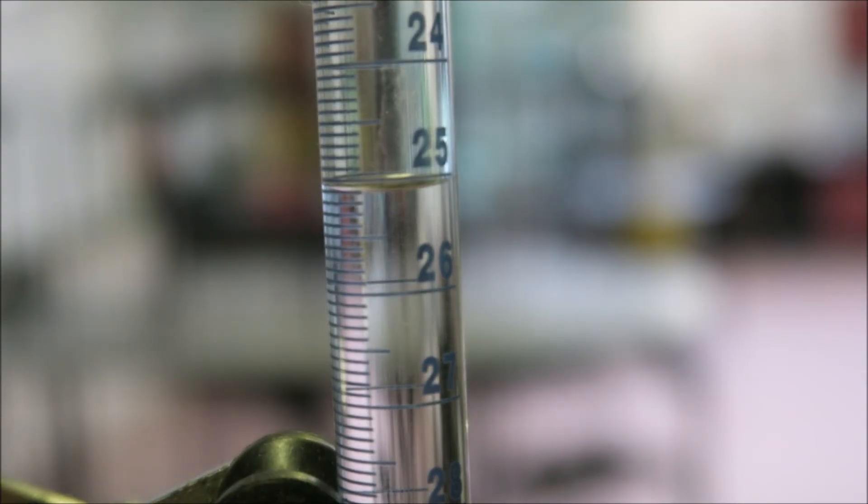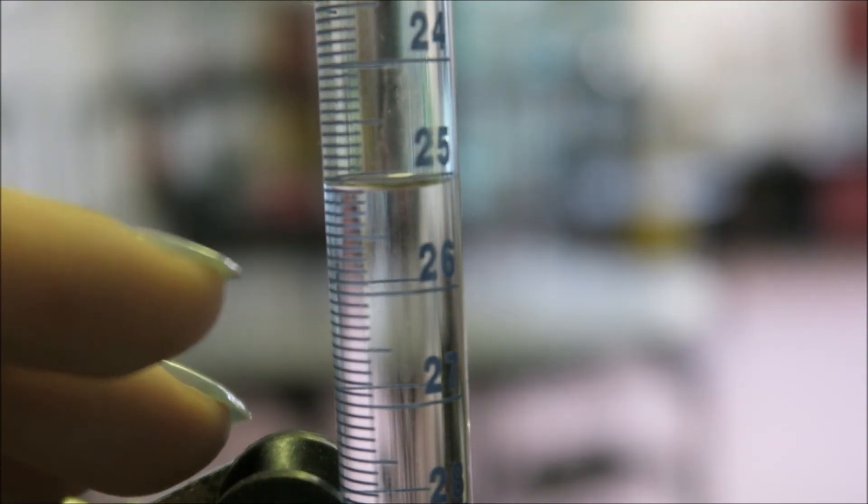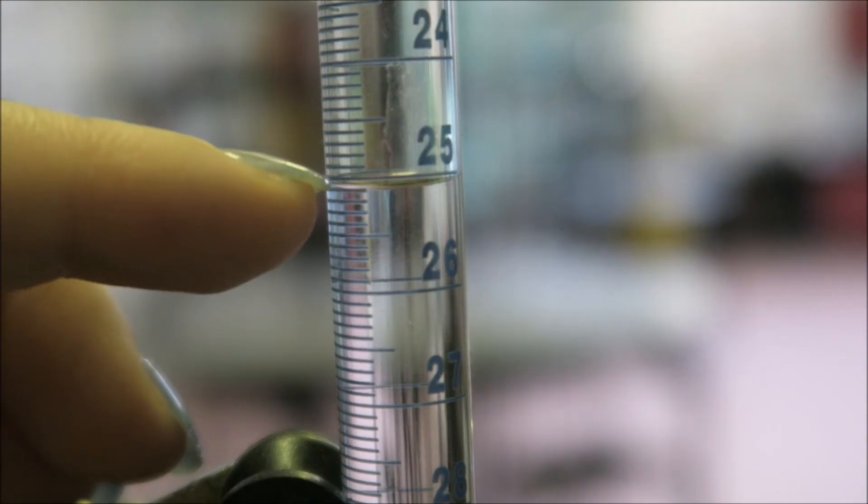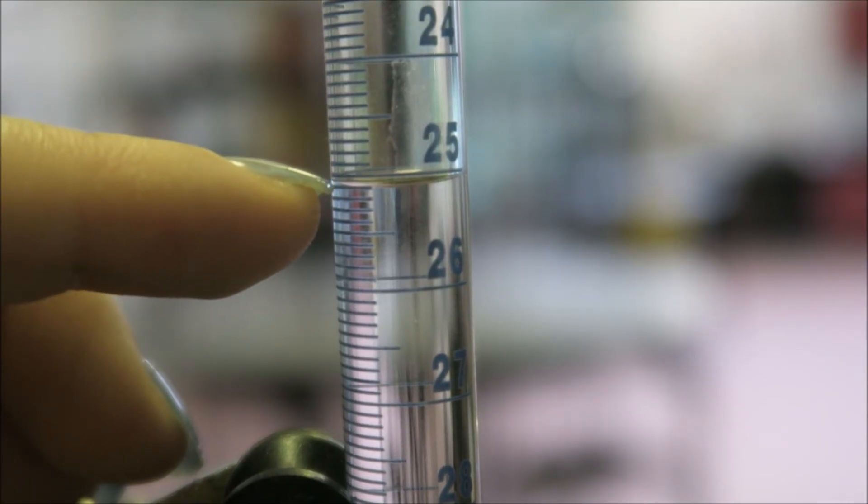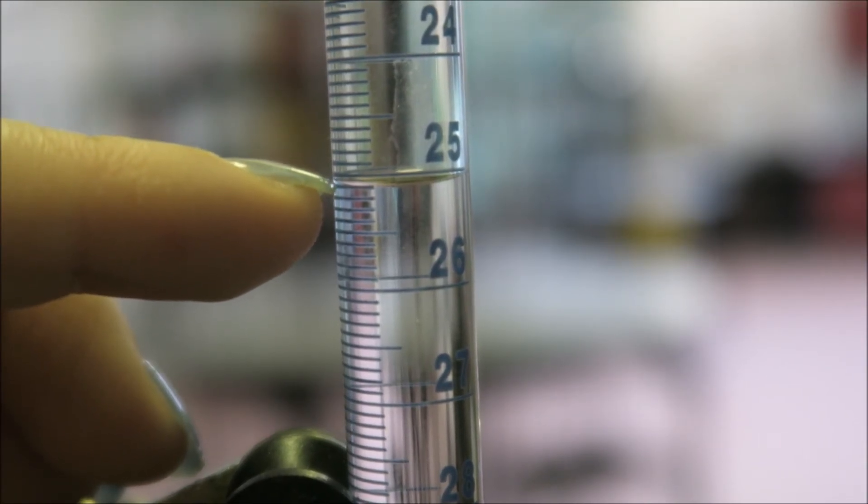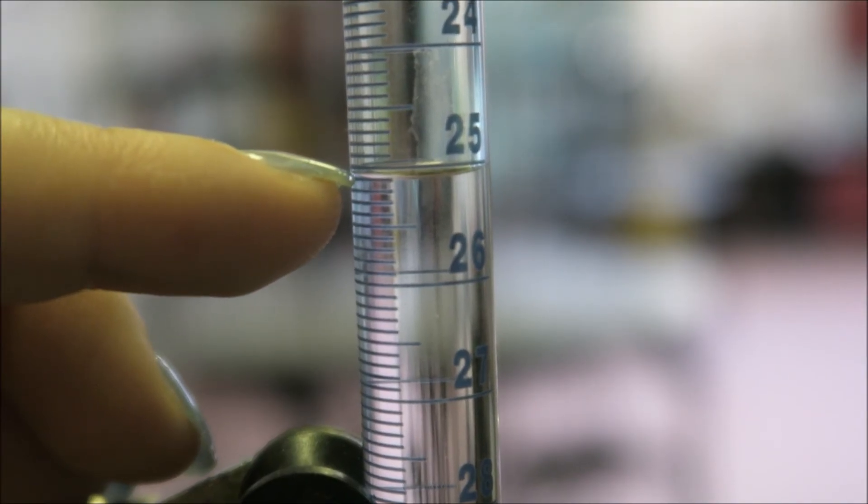What is this reading on a burette? Again, having to bend our knees. We have 25, we have 26, here is 25.1, so it's 25.10 centimeters cubed.